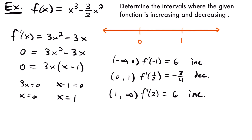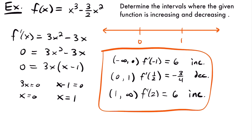For the interval from 1 to infinity, I pick x equals 2. Plugging in: 3 times 4 minus 6 equals 6 — a positive slope, so the function is increasing. The final answer: this function is increasing on negative infinity to 0, decreasing on 0 to 1, and increasing again on 1 to infinity. That's how you find intervals of increase and decrease analytically.